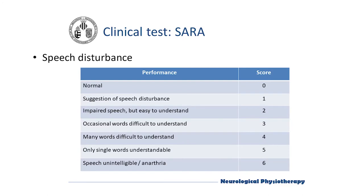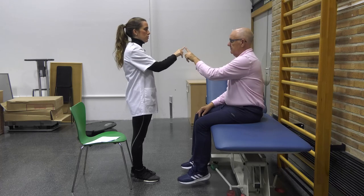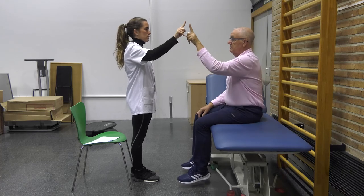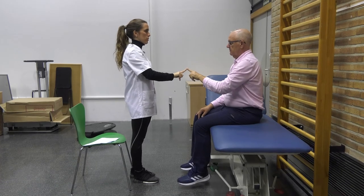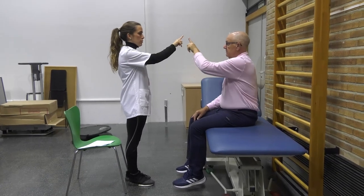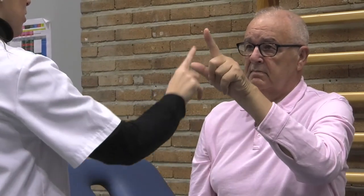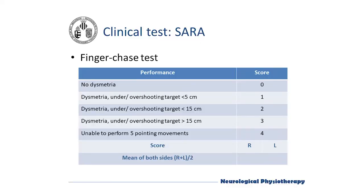The patient sits comfortably in front of the examiner and performs five consecutive sudden and fast pointing movements in unpredictable directions. The patient is asked to follow the movement with the index finger as fast and precisely as possible. We pay attention to any dysmetria in the movement.